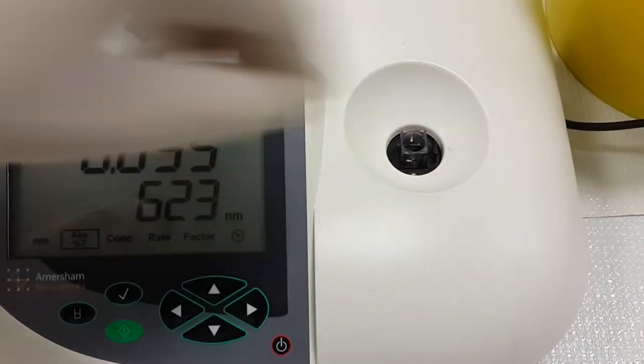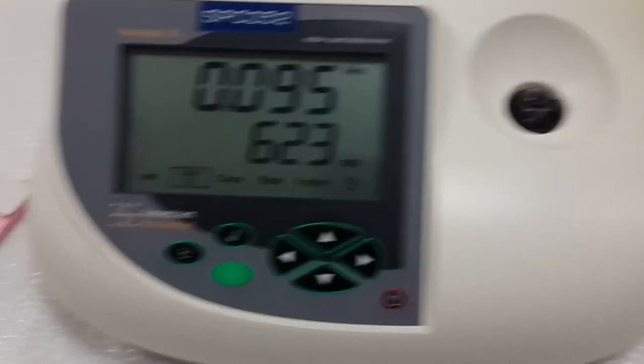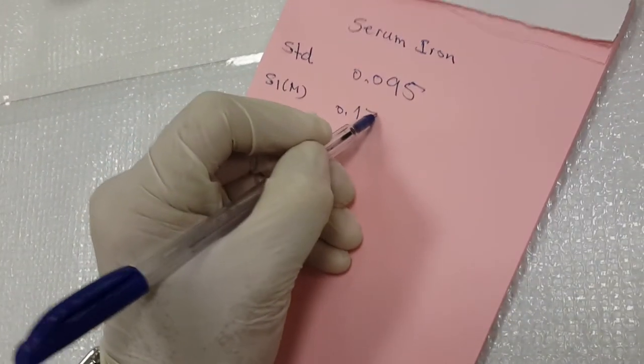Go to sample 1, which represents male sample, and press the green button. 0.170.